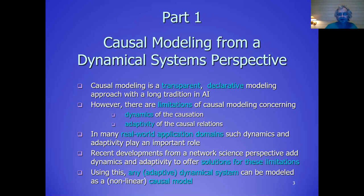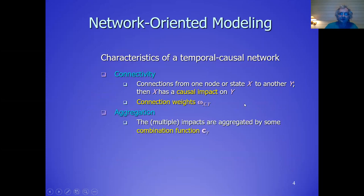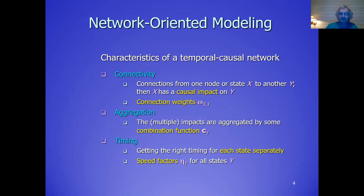We can have any dynamical system modeled from a causal perspective. The idea is that you define networks where you have connections between states, like mental states, that influence each other and can have weights. You can also have aggregation of different impacts from different sides, if you have different connections to one state that come together there. And you can have timing — specifying how fast the response of a state is to the causal impact, so how fast the causal effect really occurs. These are the basic concepts of our types of network models.